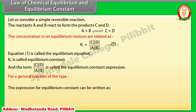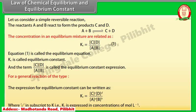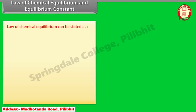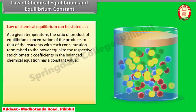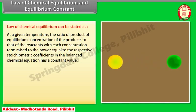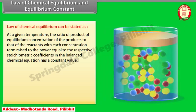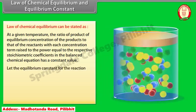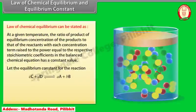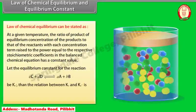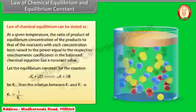For a general reaction, the expression for the equilibrium constant Kc is expressed in concentration of mole per liter. The law of chemical equilibrium states that at a given temperature, the ratio of the product of equilibrium concentrations of the products to that of the reactants — with each concentration term raised to the power equal to the respective stoichiometric coefficients — has a constant value. For the reverse reaction, the equilibrium constant Kc′ is equal to 1/Kc.